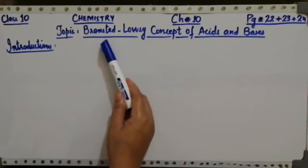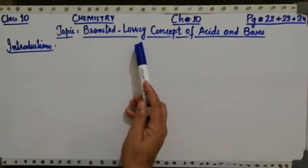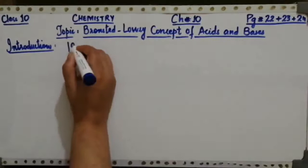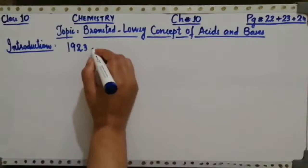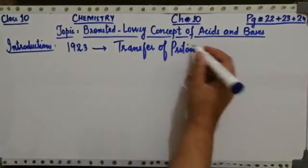The heading is Introduction. These are basically two names of scientists — Bronsted and Lowry. These names were given to this concept because they are the names of two scientists who worked in 1923: one was the Danish chemist Bronsted and the other was the English chemist Lowry, who independently presented their theories of acids and bases on the basis of proton transfer.